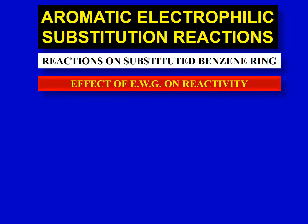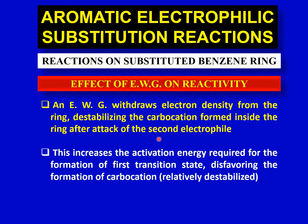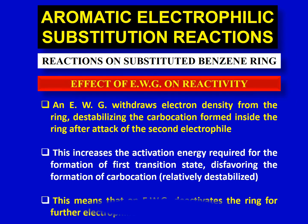Now let's see the effect of an electron withdrawing group on reactivity. If we have an electron withdrawing group attached to the benzene ring, it withdraws electron density from the ring, destabilizing the carbocation of the sigma complex formed after attack of the second electrophile. When this carbocation is destabilized, it increases the activation energy required for the first transition state, disfavoring carbocation formation. Therefore, the electron withdrawing group deactivates the ring for further electrophilic substitution.